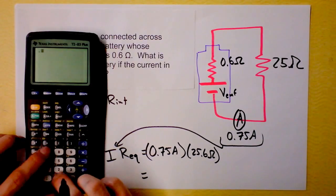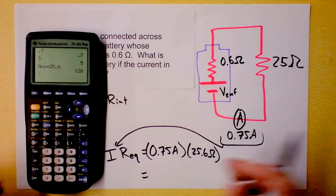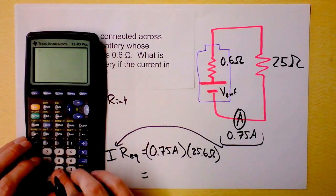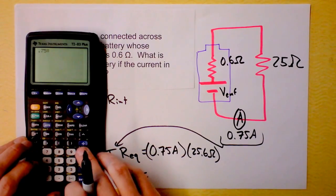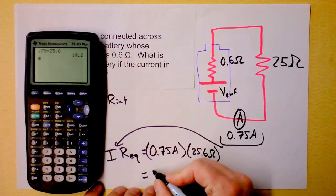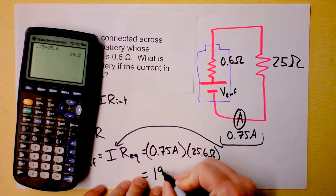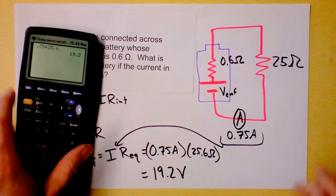That means that it must be 0.75 times 25 point, why am I doing this for you? What's wrong with you guys? I can't even do it, 0.75 times 25.6. So I get a current of, wow, no, sorry, a voltage that is an EMF of 19.2 volts.